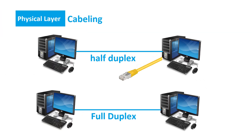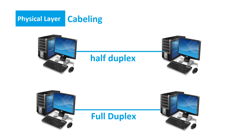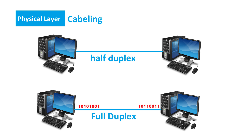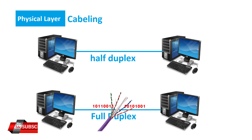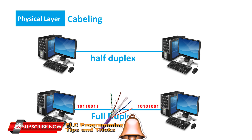Ethernet twisted pair cable utilizes an 8-pin RJ45 connector at both ends of the cable. This can transmit and receive data in half and full duplex mode. Half duplex transmits data in one direction at a time, while full duplex allows data transmission in both directions simultaneously, achieved by using two twisted pair cables.